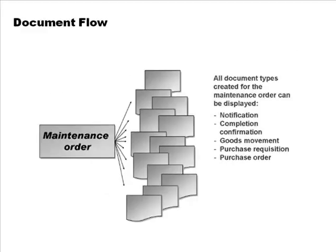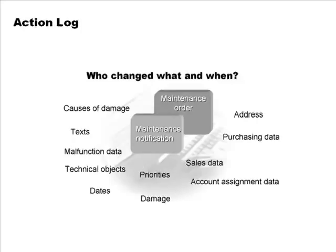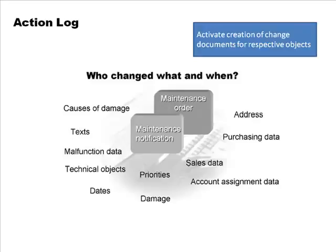This is the document flow for maintenance orders. All the documents created — purchase requisitions, purchase orders, invoices — can all be tracked in one central place, just like document flow for sales orders. There is also something called the action log, which has to be activated and allows you to track all of these pieces of information. It logs every single action that takes place.